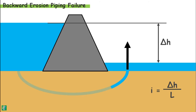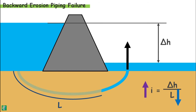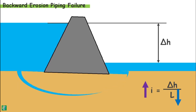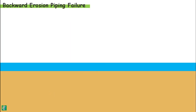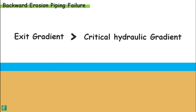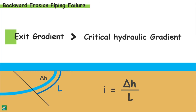This removal of soil particles decreases the length of flow, which increases the hydraulic gradient even more, causing further removal of soil. This process of erosion in the backward direction continues towards the upstream, and a pipe-like opening is formed below the dam. The hydraulic structure becomes unstable and may fail. This type of piping is called backward erosion piping, and it generally occurs when the exit gradient becomes greater than the critical hydraulic gradient. The hydraulic gradient near the exit point of the water is called the exit gradient.